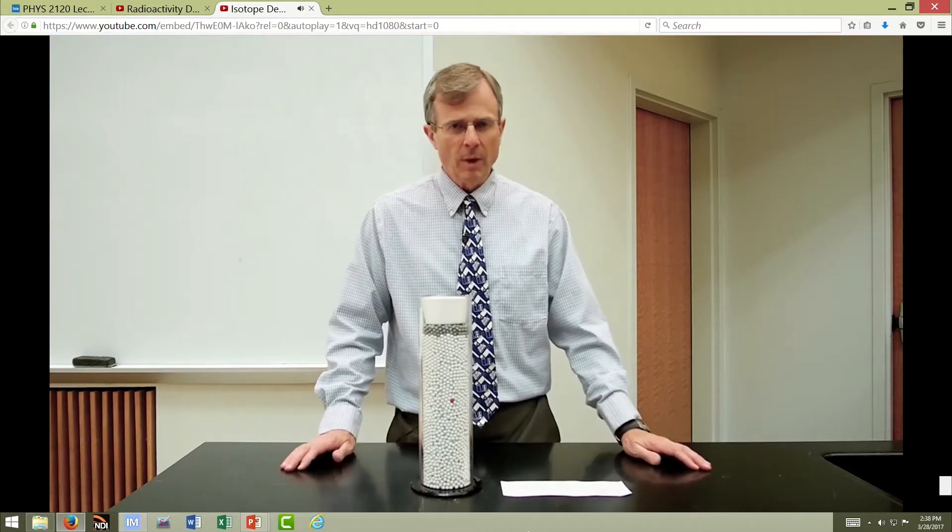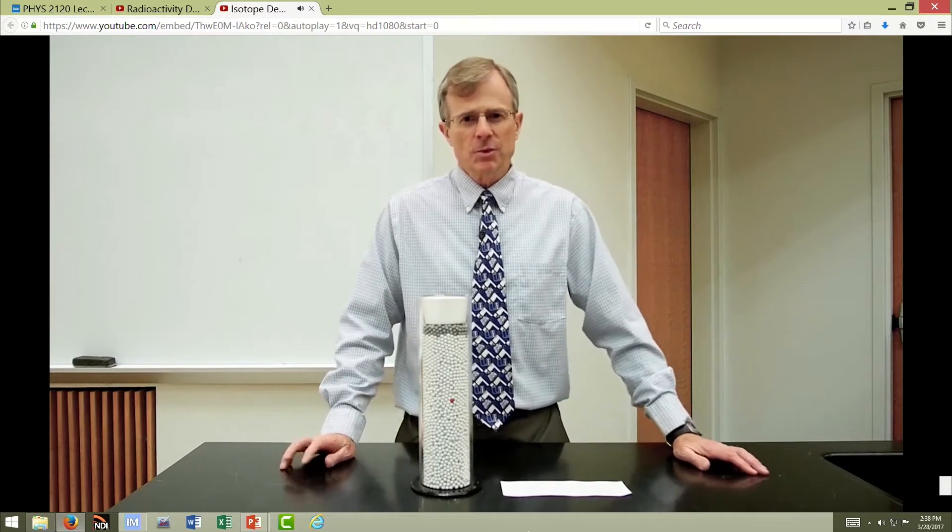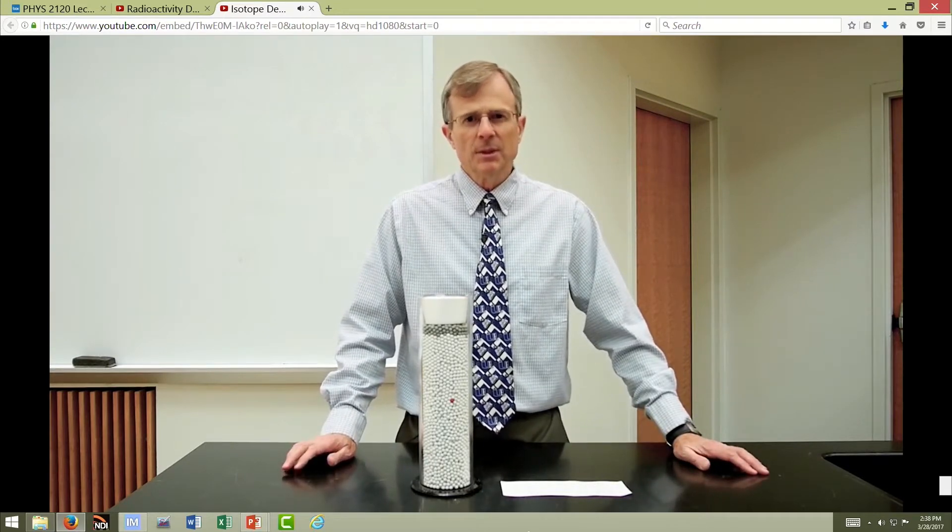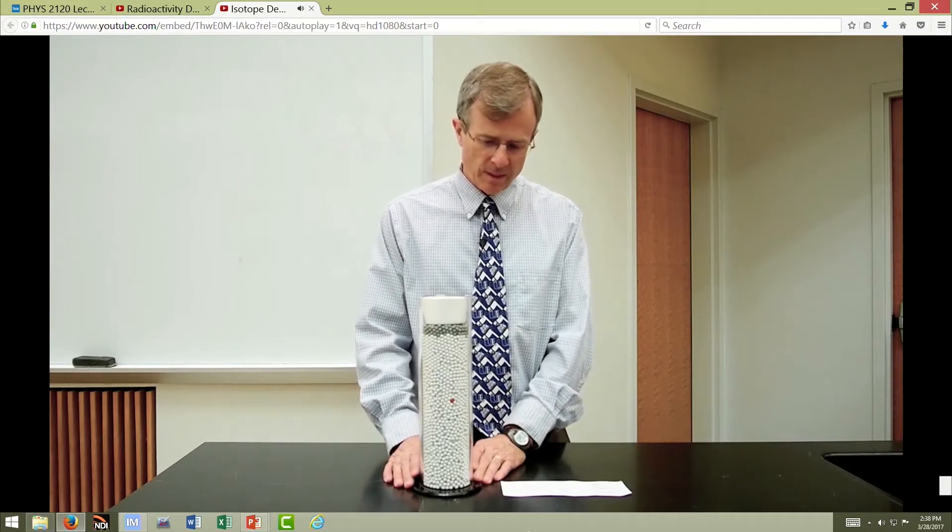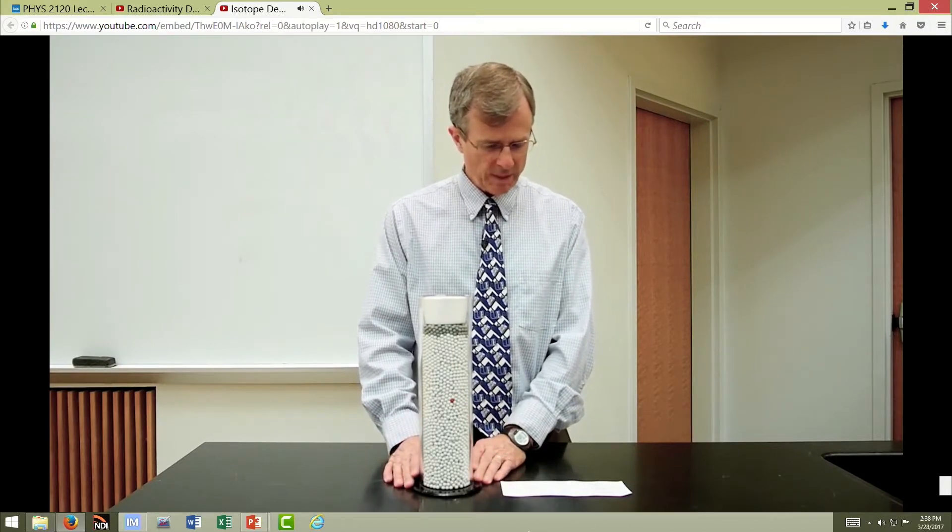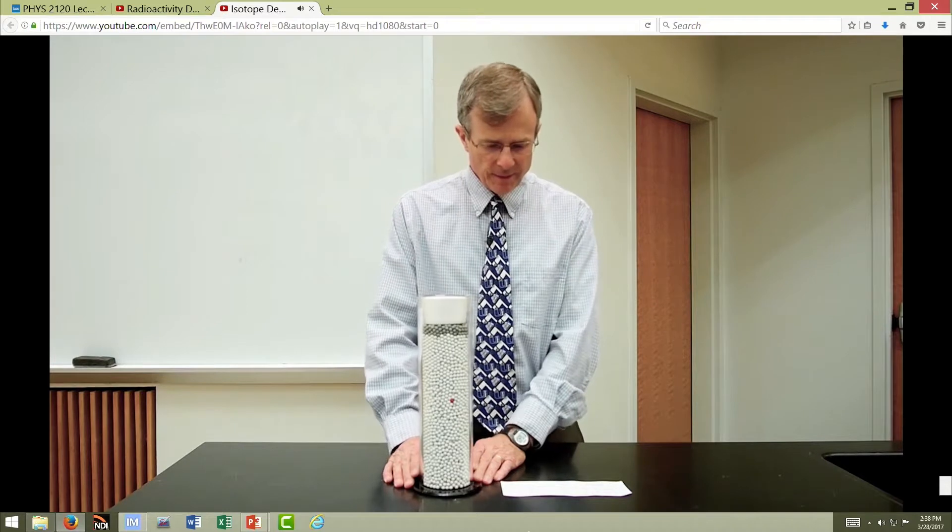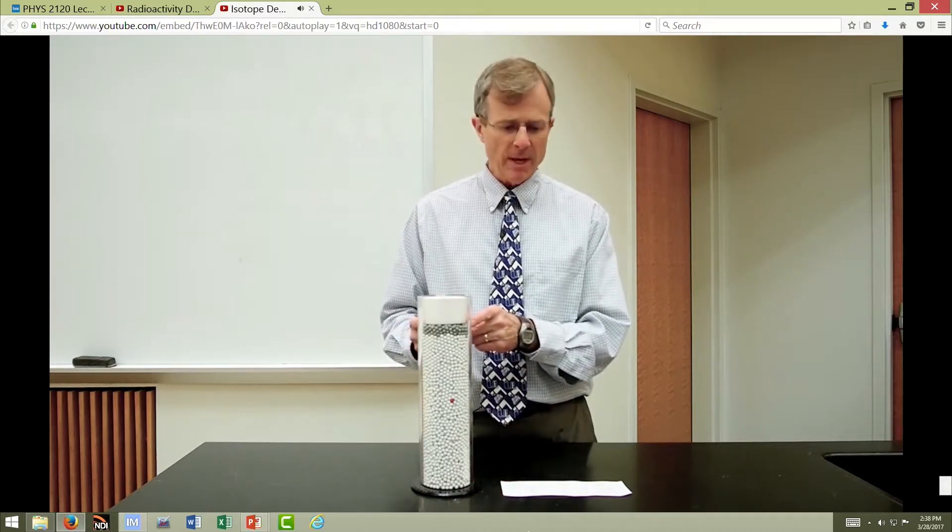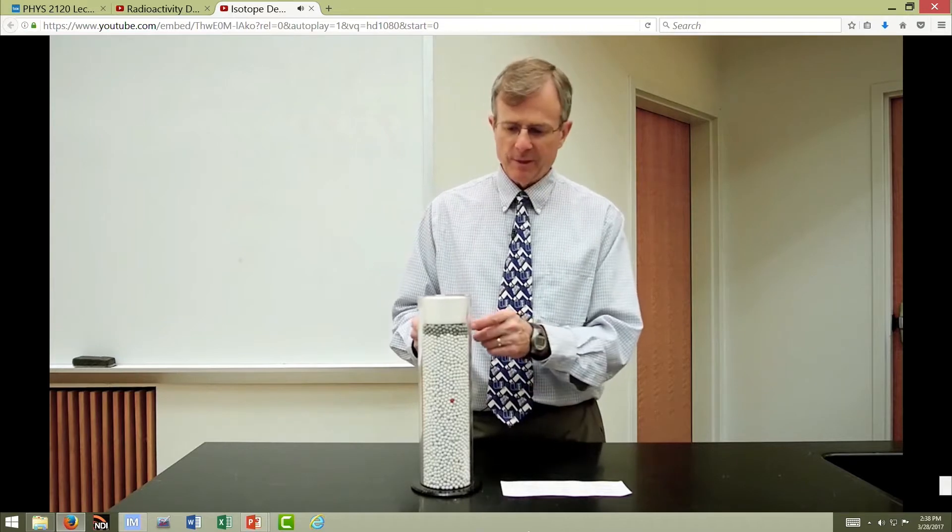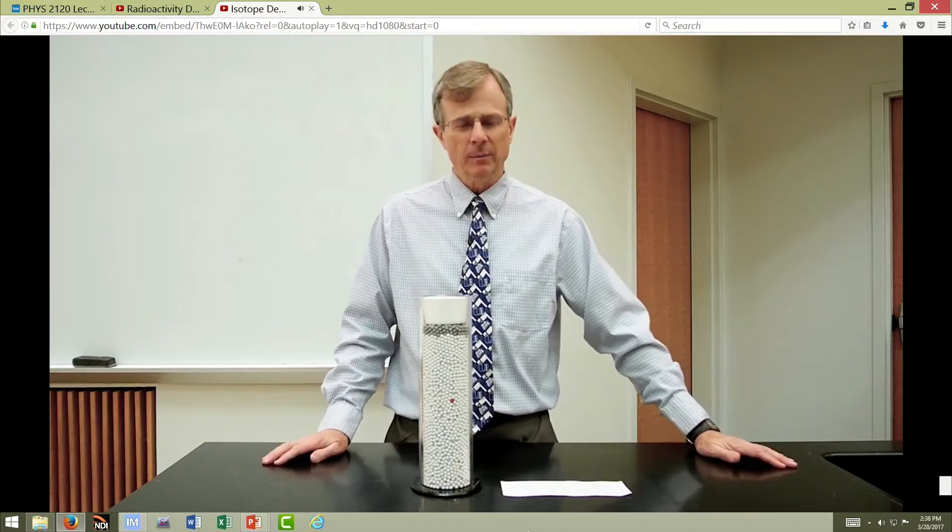Potassium-41 has two additional neutrons in it. So 22 instead of 20. And it's 6.7 percent abundant. And it's represented by these gray balls, and there are 558 of these gray balls.